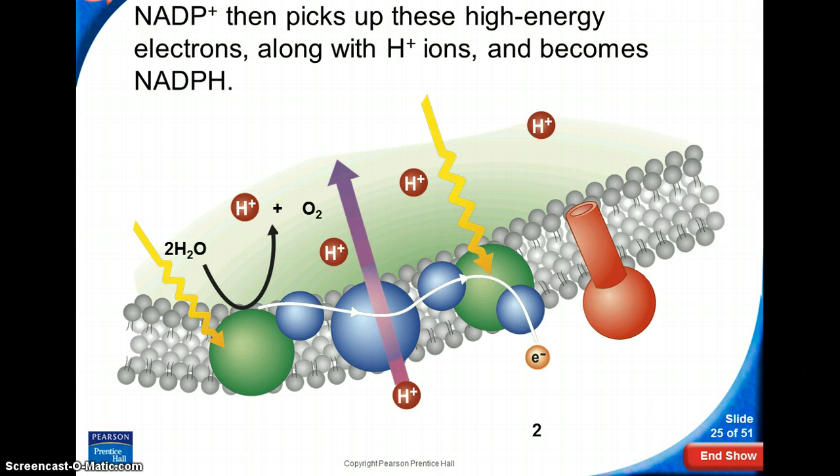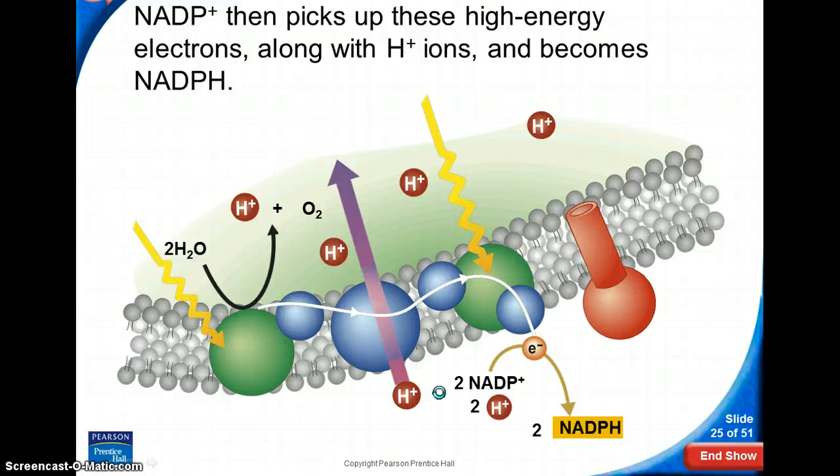And as it does that, this electron has to go someplace. And it is NADP+, which is almost like a form, an energy form right here, that actually will grab that electron and make, with that electron, attach two more hydrogens to become NADPH. So it's now a stored battery.